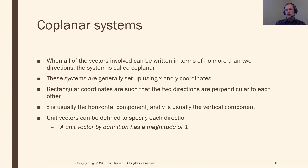A coplanar system essentially means a two-dimensional system — everything written in a plane, like a piece of paper or a computer screen. That's where you put your x and y coordinates. When setting up x and y coordinates, make sure they are perpendicular to each other. Normally, x goes left and right and y goes up and down. So x is the horizontal component and y is the vertical component.